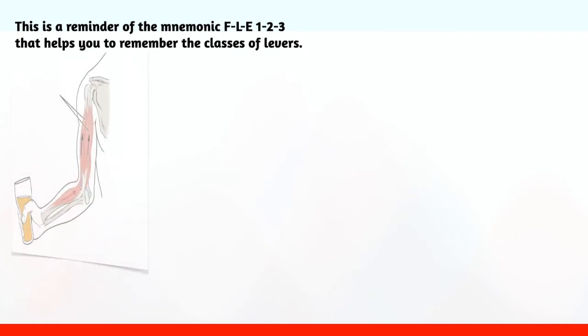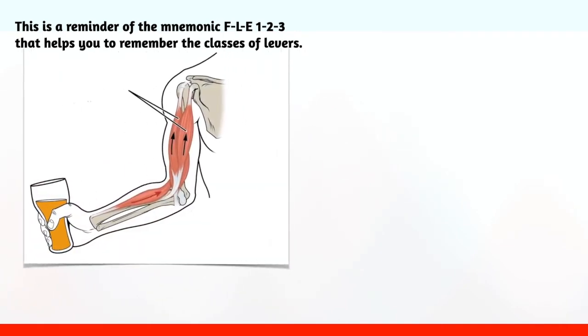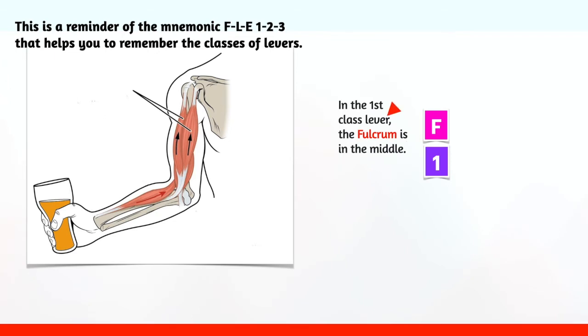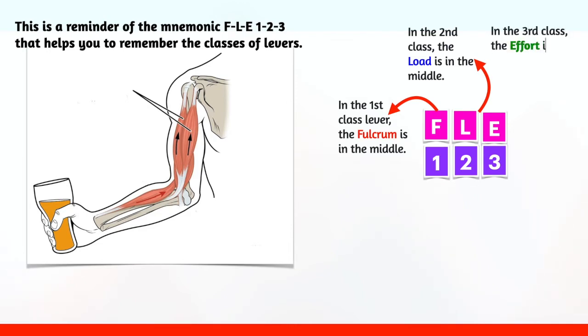Let us revisit the mnemonic FLE1223 that helps you to remember the classes of levers. In the first class levers, the fulcrum is in the middle. In the second class levers, the load is in the middle. In the third class levers, the effort is in the middle.